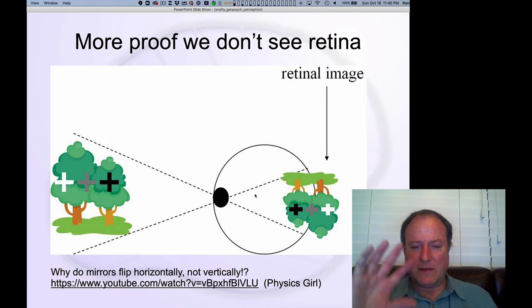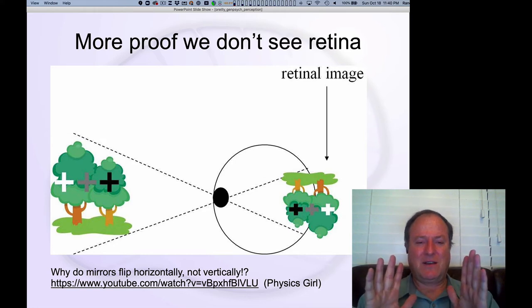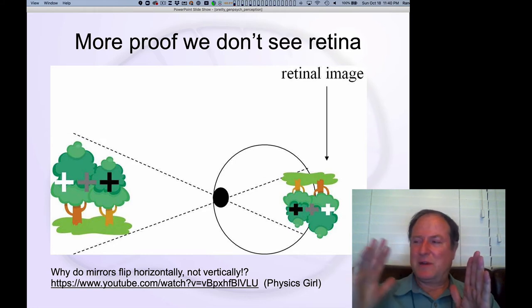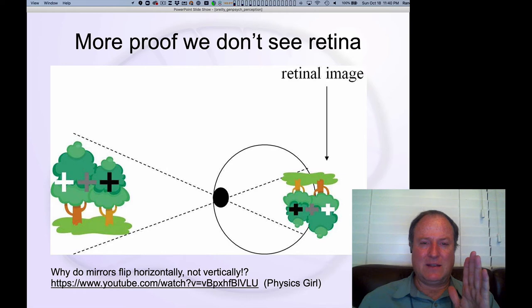It turns out for the mirror illusion, which I encourage you to watch, it's just because you're seeing yourself from an opposite perspective. So it's not actually flipping anything at all. It's kind of weird - you should watch the video.